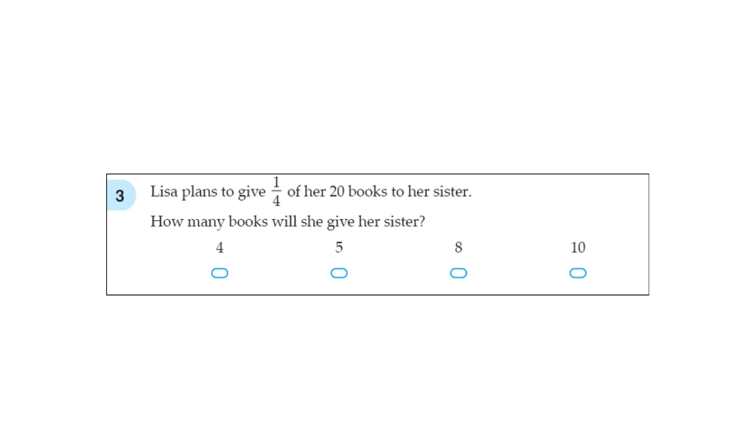Question 3. Lisa plans to give one quarter of her 20 books to her sister. How many books will she give her sister? So one quarter of means multiplied, times the multiply sign, then 20 books. You can imagine there's a 1 in the denominator. So what do we do here? 1 times 20 is 20, 4 times 1 is 4. 20 divided by 4 is 5.